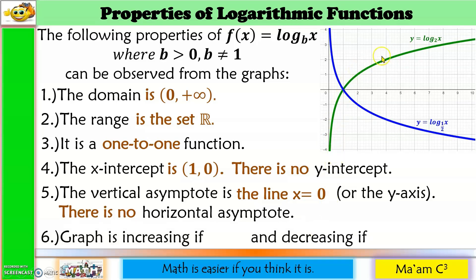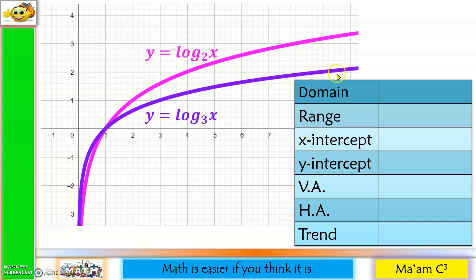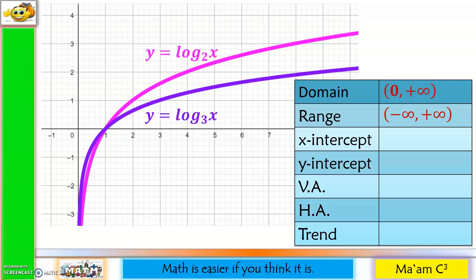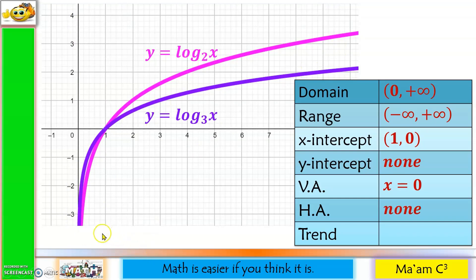The graph is increasing when the base is greater than 1, and decreasing when the base is less than 1 but greater than 0. For the practice graphs shown (purple and pink): the domain is (0, +∞), 0 not included; range is (−∞, +∞); x-intercept is (1, 0); there is no y-intercept; vertical asymptote is x = 0; no horizontal asymptote; and since both bases are greater than 1, the trend is increasing.